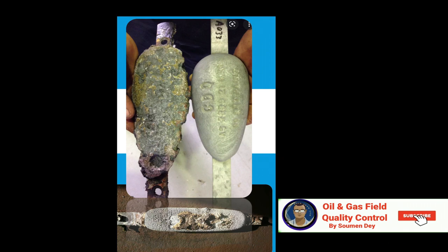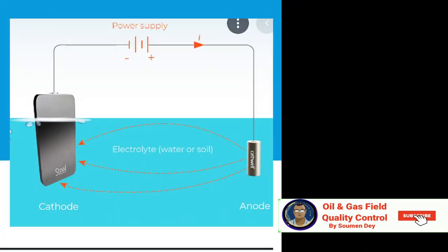Is copper an anode or cathode? In a closed circuit with current flowing between two electrodes, zinc behaves as the anode, supplying electrons of the galvanic cell, and copper acts as the cathode, consuming electrons.